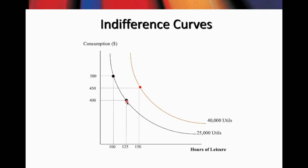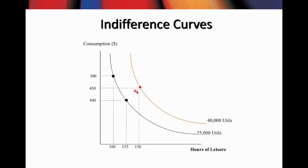Moving to another point on the same indifference curve, this worker now has more leisure and works less than previously, so he can only afford $400 worth of goods and services but has more leisure time. There is a trade-off between the consumption level — from $500 to $400 — and leisure hours. If the worker wants more leisure hours, he needs to forego some level of consumption, as indicated by the downward-sloping indifference curve.